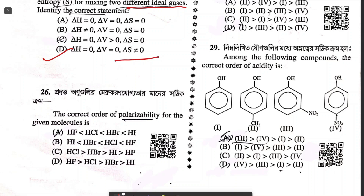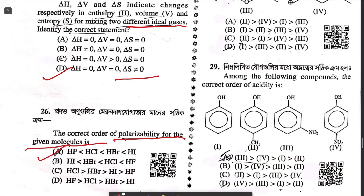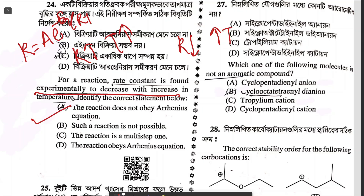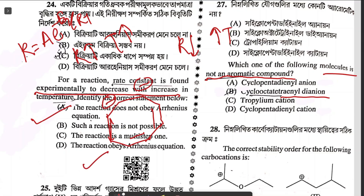Question twenty-six on polarizability is related to Fajan's rule: smaller the size of the anion, greater the polarizability — option A. Question twenty-seven asks which molecule is not aromatic. Cyclopentadienyl anion is aromatic. The molecule in question is planar and follows 4n+2 π electrons (10 π electrons). Cyclopentadienyl cation is not aromatic — it is anti-aromatic. The only possible answer is option D.